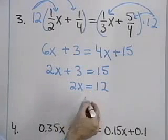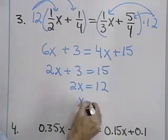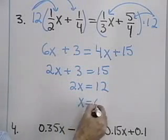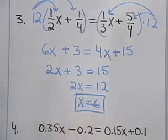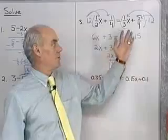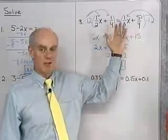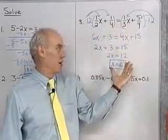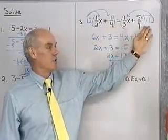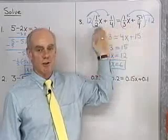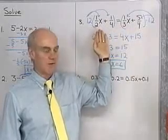Add negative 3 to both sides, and I have 2x is equal to 12. Multiply both sides by 1 half, and I have x is equal to 6. I could have worked this same problem leaving the fractions, but I think it's easier to clear the equation of fractions first.